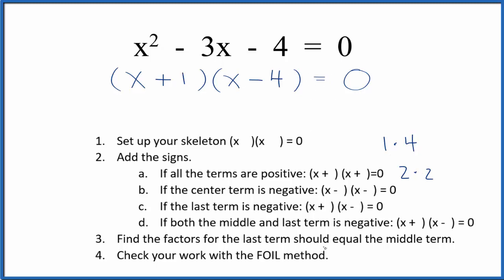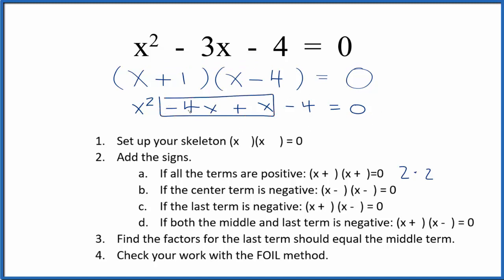But we can check our work with the FOIL method. That looks like this. So we multiply the first term. That gives us the x squared outside, inside, and then the last term. That gives us this here. Then we can combine these values for x minus 4x plus x. That's minus 3x. So we have x squared minus 3x minus 4 equals 0. That's the same thing as we had up here, so we know we're correct.